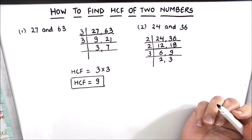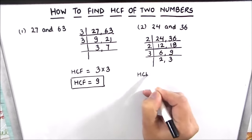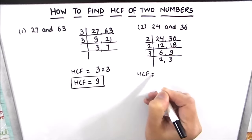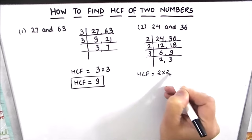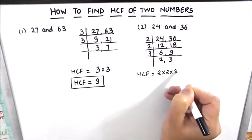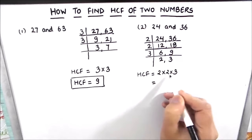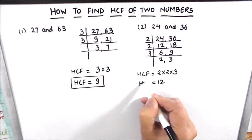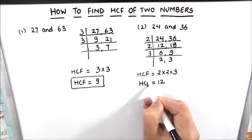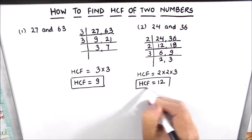The HCF of the two numbers will be the product of the numbers on the left-hand side of the ladder. So 2 times 2 times 3 is the HCF. 2 times 2 is 4, and 4 times 3 is 12. So the HCF of 24 and 36 is 12.